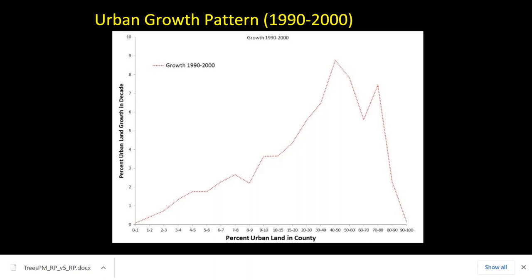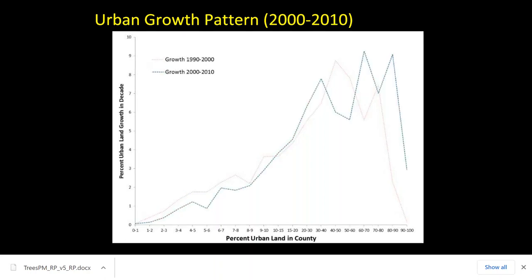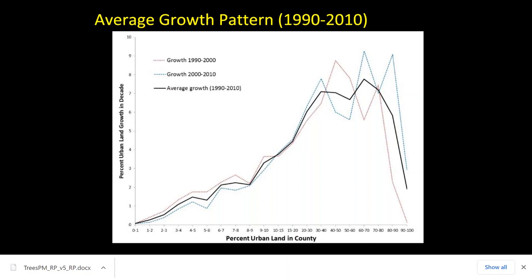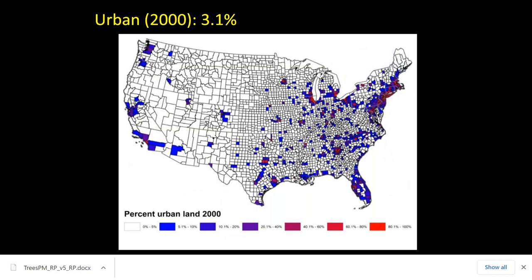Looking at 2000 to 2010, despite the economic depression in the late 2000s with the housing market collapse, we found pretty much the same pattern — slightly less growth in less urban counties and slightly more growth in more urban counties. To make our projections, we took the average of the last 20 years of development patterns across the United States and projected this forward to see what the country would look like over the next 50 years.